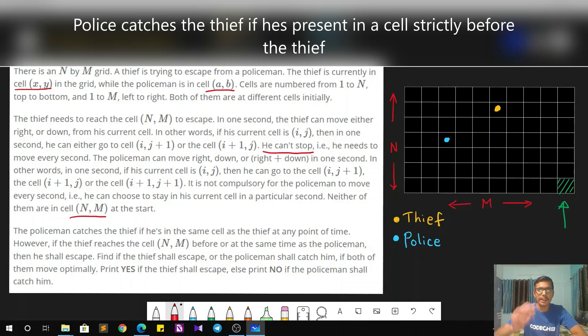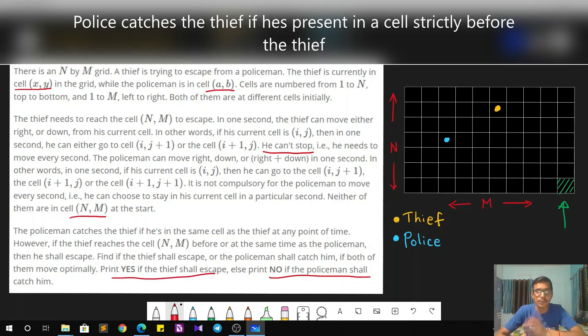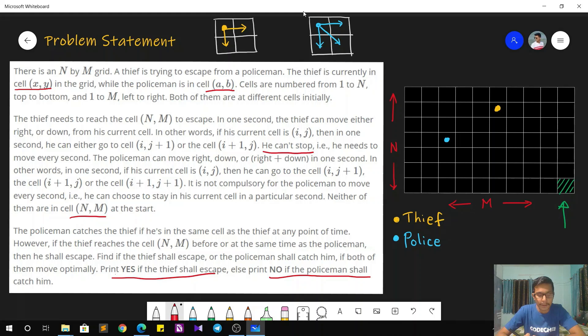If while traveling at any point of time, if the police is present before the thief in that cell, then the thief is caught. In that case, we have to answer no, the thief cannot escape. The policeman shall catch him. And we have to print yes if the thief is successfully able to escape. This is the question and now let's see how to approach the solution.